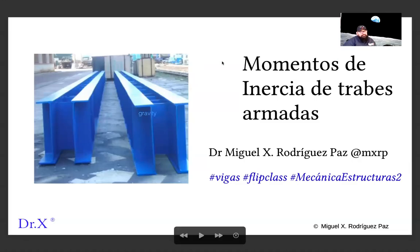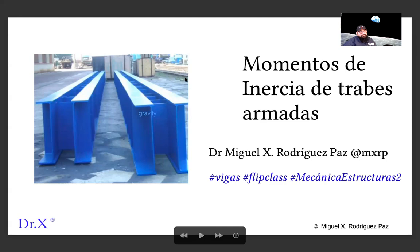Video two of area properties for Mechanics Two. Today we are going to talk about the moments of inertia of built girders. This is another example of a built girder: we have two channels here back to back, joined by plates. By positioning these two channels like this, we get a very good section for a beam — 'viga' in Spanish.